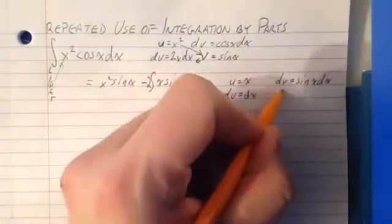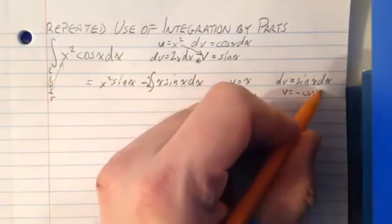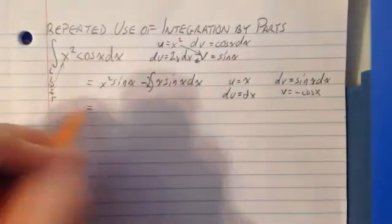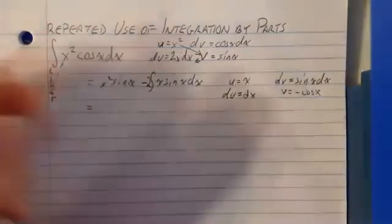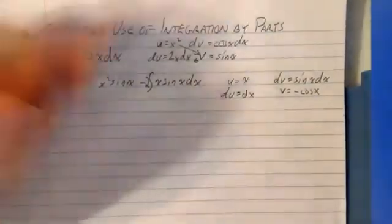And du is going to be dx. V antiderivative of sine is negative cosine x. Now one of the things I like about this is that there's constants that have to be multiplied and negatives that have to be accounted for. I'm going to show you a good strategy for how to do that. So let me move this down one line just so I don't run into other stuff.